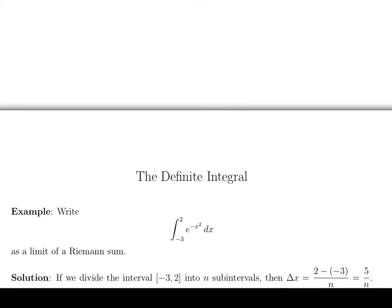Okay, so the first thing is, if we divide the interval negative 3 to 2 into n subintervals, then delta x, which is the width of each subinterval, will have to be 2 minus negative 3 all over n, which is 5 over n.